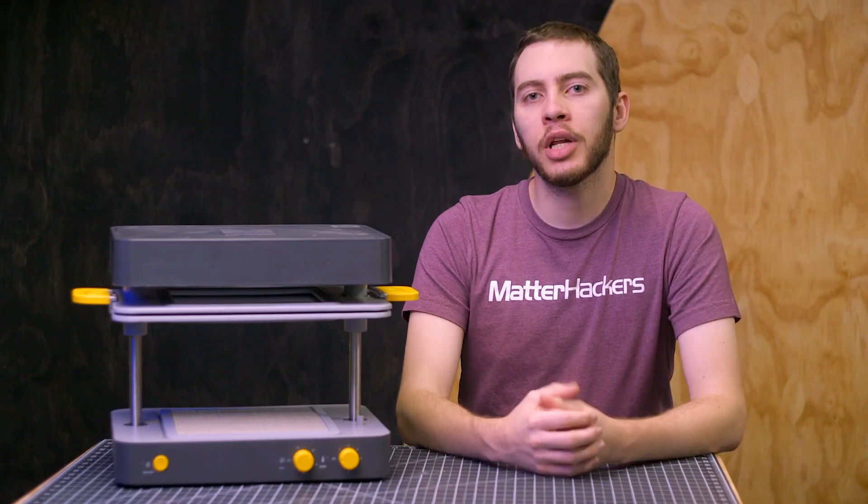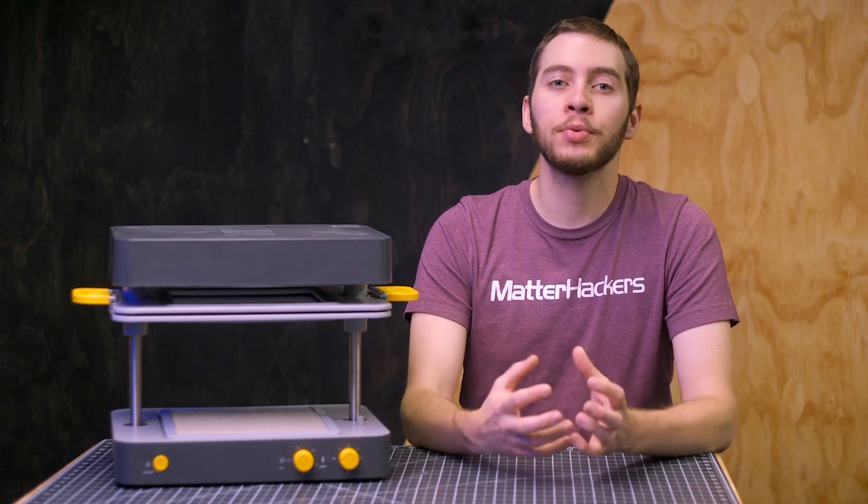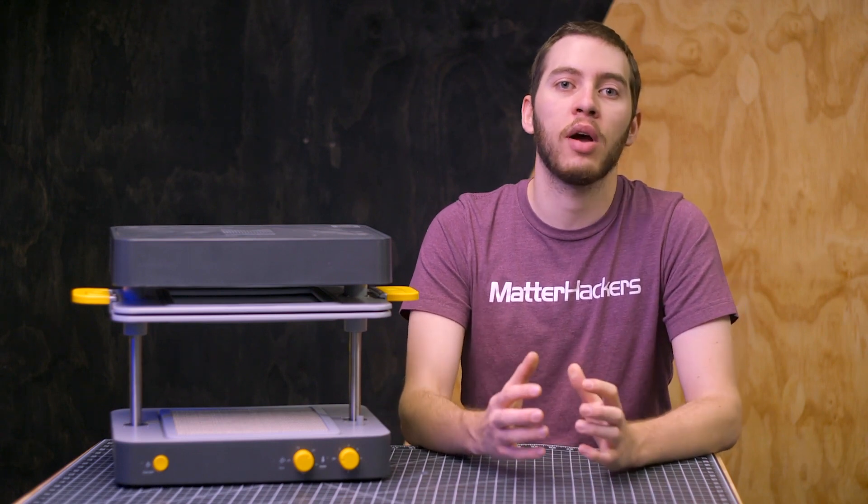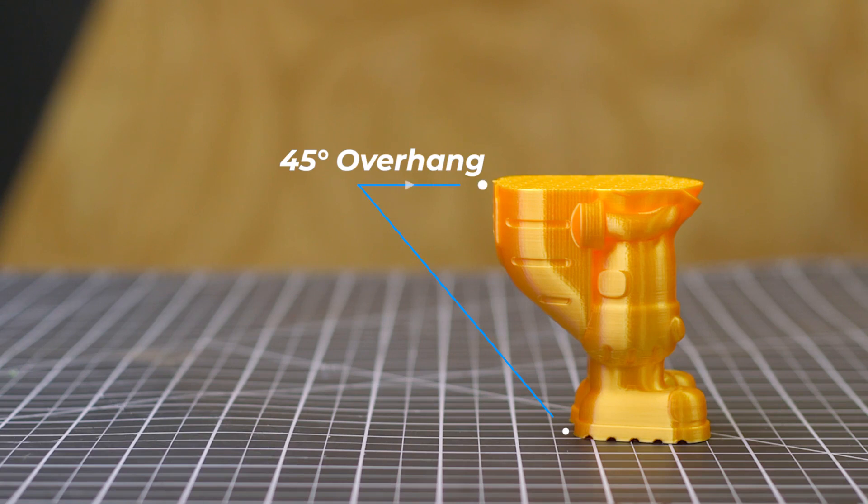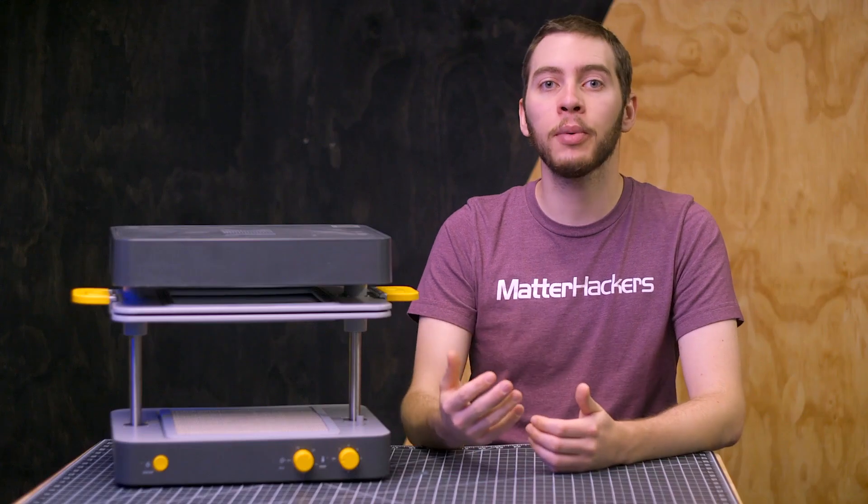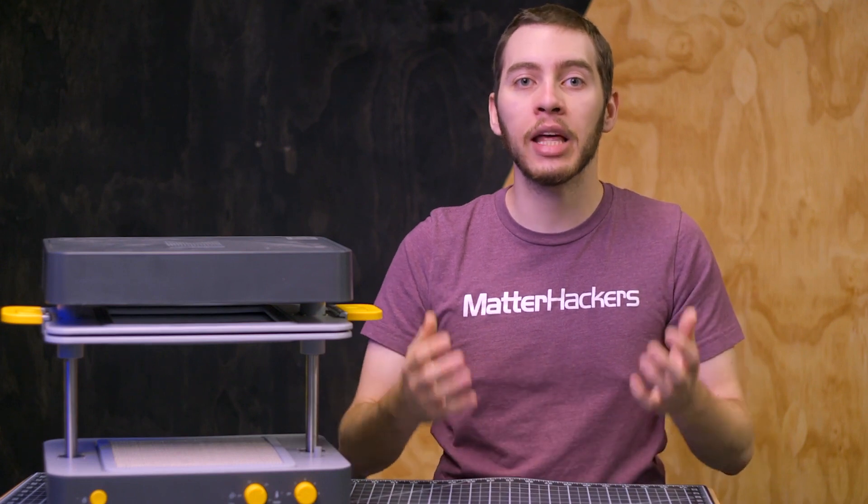The big thing to consider when creating an object for vacuum forming is that objects cannot have overhangs whatsoever. With 3D printing, 45 degree overhangs are often the limit of unsupported structures. But with vacuum forming, any overhang will become a key that locks the original within the vacuum formed plastic shell.